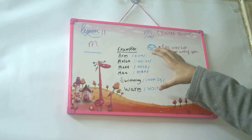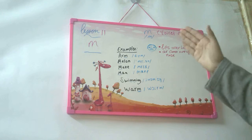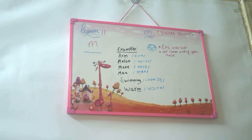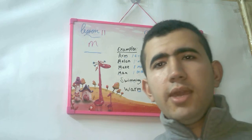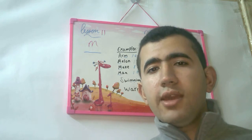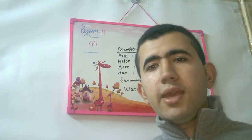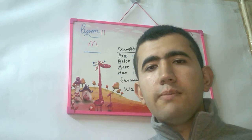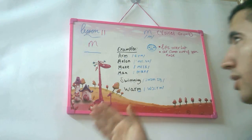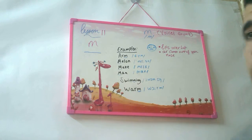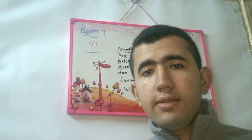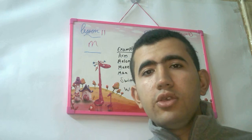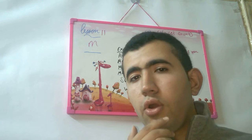And these are the phonetics. M is voiced — remember that. M will be at the beginning or at the end of the word, like moon at the beginning, or arm at the end.